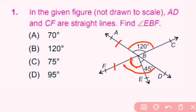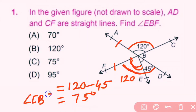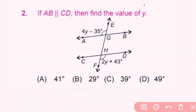Angle FBD is the opposite angle of ABC, so FBD is also 120 degrees. We have to find angle EBF, so angle EBF equals DBF minus DBE, which gives 75 degrees. So angle EBF is equal to 75 degrees. C is the correct answer.